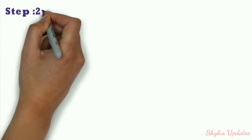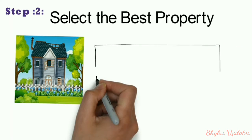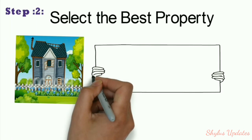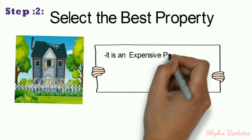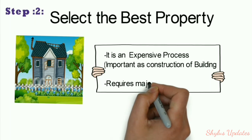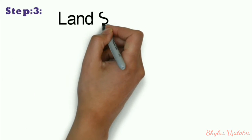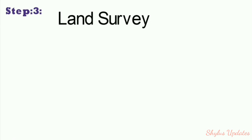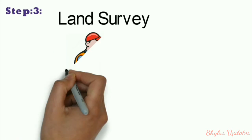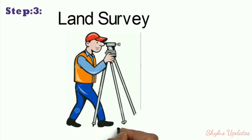Step 2: Select the best property. Selecting the best property is a very expensive process, equal to the cost of construction of a building, and requires major investment. Step 3: Land survey. A land survey prior to any construction work is needed to determine elevation, reduce level, and types of soil.